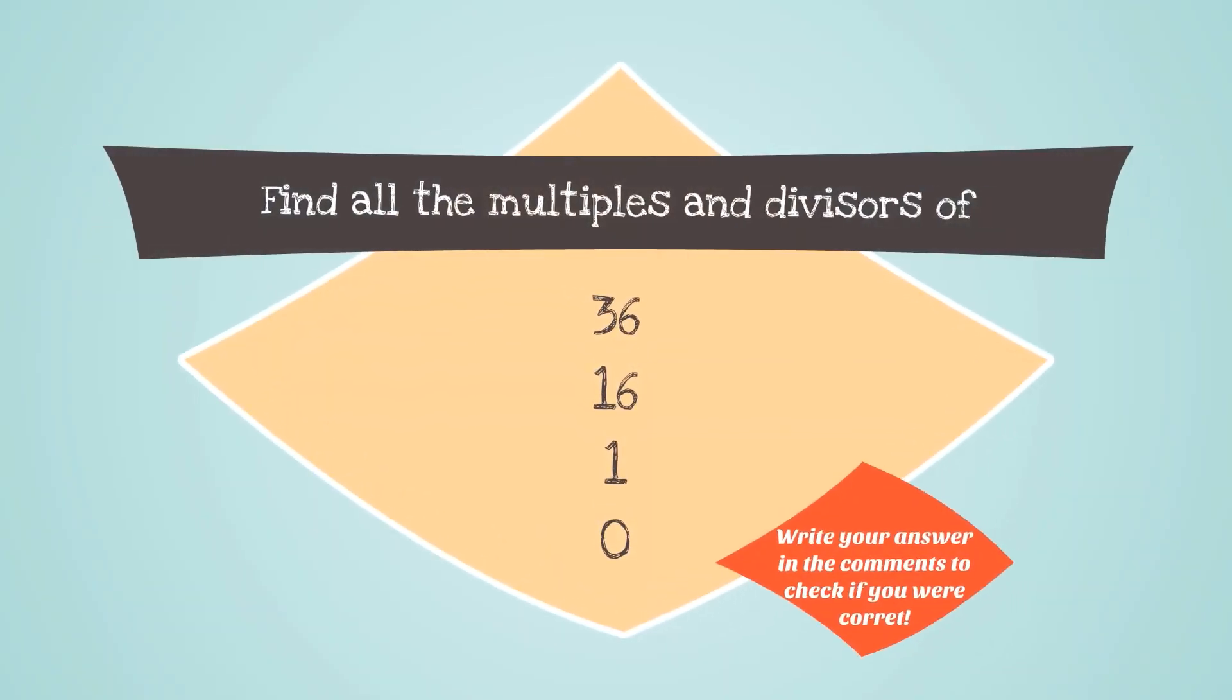Here's a question for you to solve on your own. Find all the multiples and divisors of the following numbers: 36, 16, 1, and finally 0.